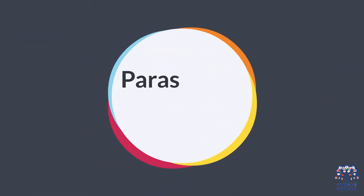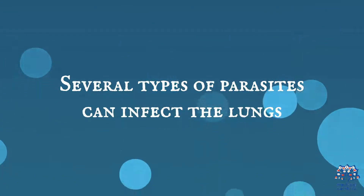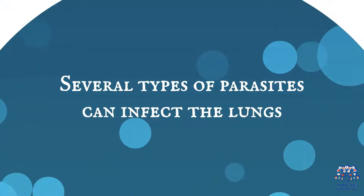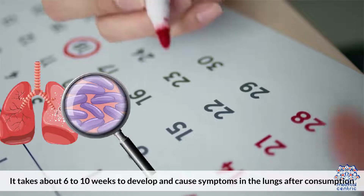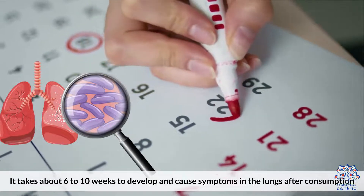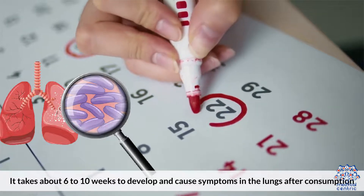Parasites in the lungs. Several types of parasites can infect the lungs. A common parasite in the United States is Paragonimiasis. It enters the body through undercooked crabs and crawfish, and it takes about 6 to 10 weeks to develop and cause symptoms in the lungs after consumption.